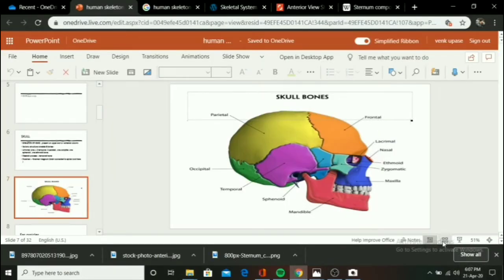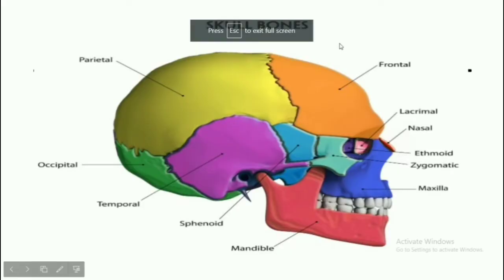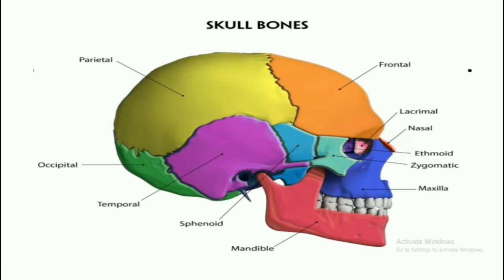Here is a diagram showing the skull bones. The forehead part, above the eyes, is called the frontal bone. We need to remember the number of frontal bones — whether it is one or two.